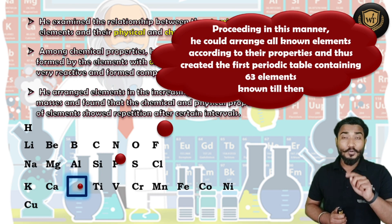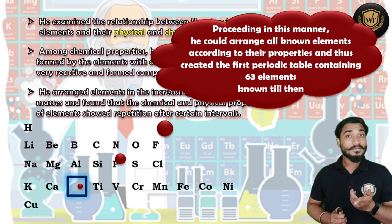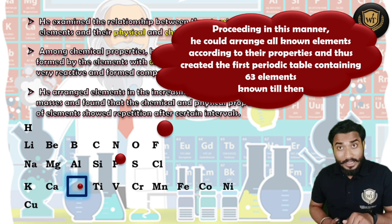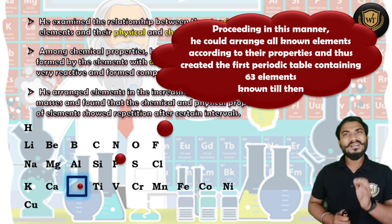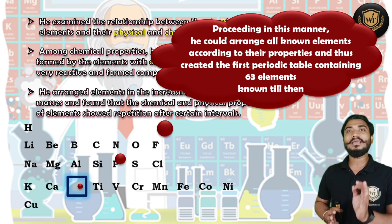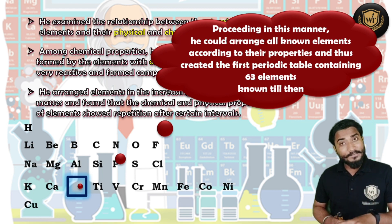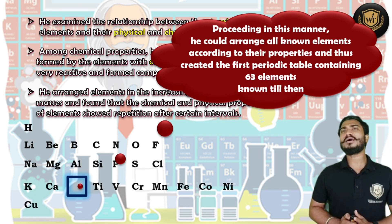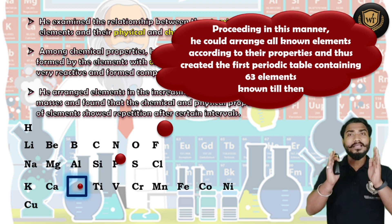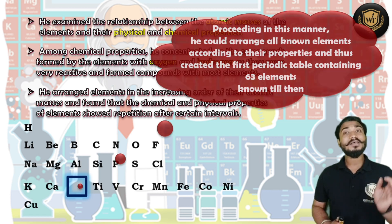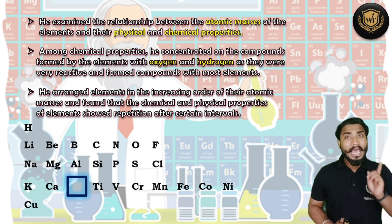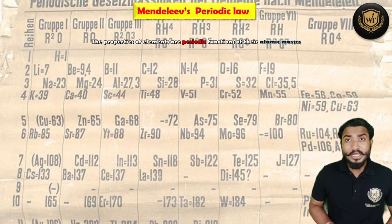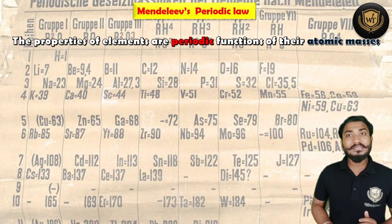To recall: during Dobereiner's time there were 30 elements and not all were following his law, which is why it failed. During Newlands' time there were 56 elements but they were not all completely arranged in his table. During Mendeleev's time there were 63 elements, and he was the first person who successfully arranged all 63 elements. He thus created a table that was famously called Mendeleev's Periodic Table.